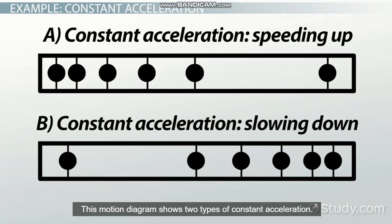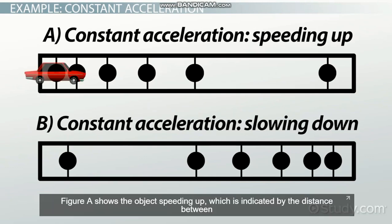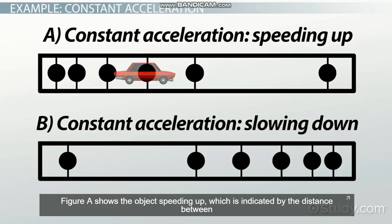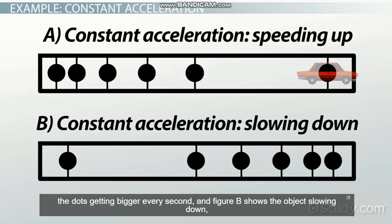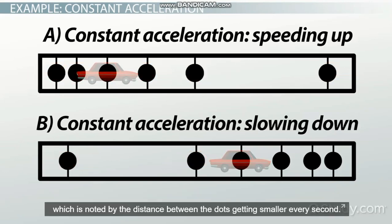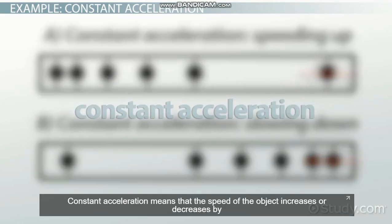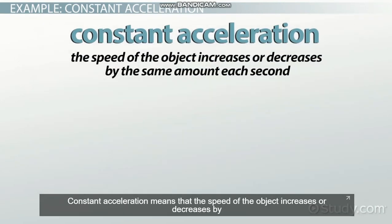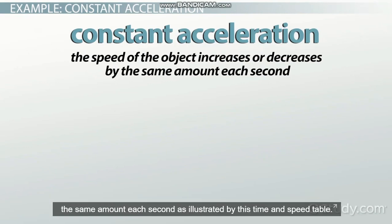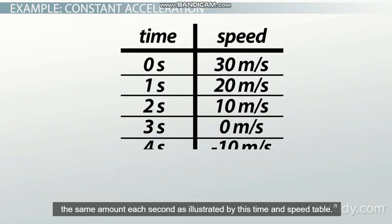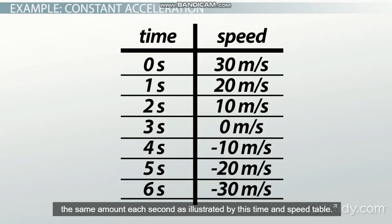This motion diagram shows two types of constant acceleration. Figure A shows the object speeding up, which is indicated by the distance between the dots getting bigger every second. Figure B shows the object slowing down, which is noted by the distance between the dots getting smaller every second. Constant acceleration means that the speed of the object increases or decreases by the same amount each second, as illustrated by this time and speed table.